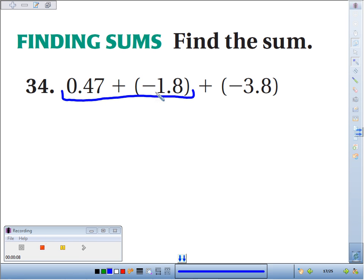So we'll start here. Let's take 0.47 plus negative 1.8. The rule is, we have different symbols, so this is positive and this is negative. We need to take the bigger number minus the smaller number first, so big minus small.